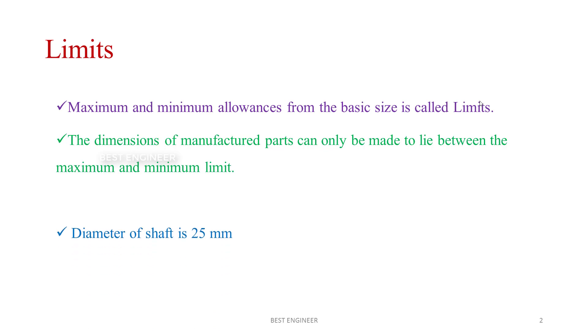We have an example here. Diameter of the shaft is 25 mm and limits are plus or minus 0.15. The maximum limit is 21.15 and minimum limit is 24.85. The maximum allowances from upper side to lower side, this is called limits.